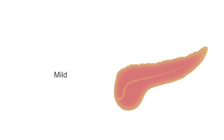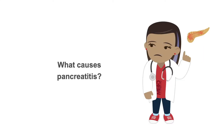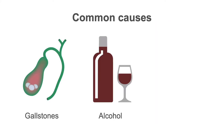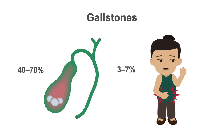Acute pancreatitis is subdivided based on severity into mild, moderately severe, or severe. The cause of pancreatitis is based on the etiology. The three most common causes are gallstones, alcohol, and hyperlipidemia. Gallstones are the most common cause of acute pancreatitis and account for 40-70% of cases. However, only 3-7% of patients with gallstones actually develop pancreatitis.